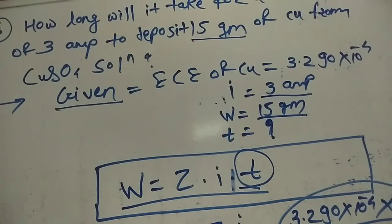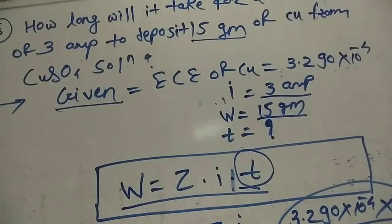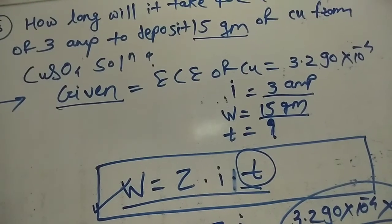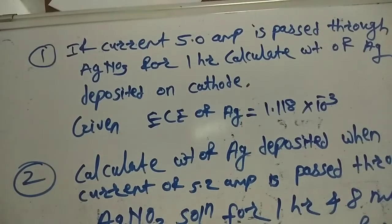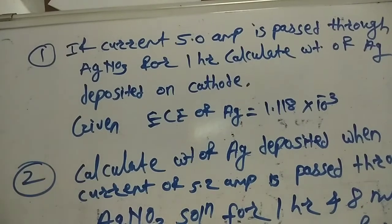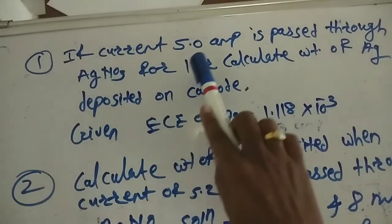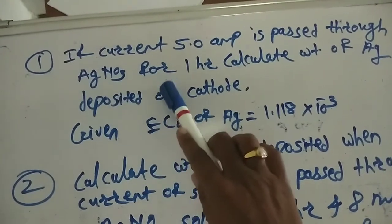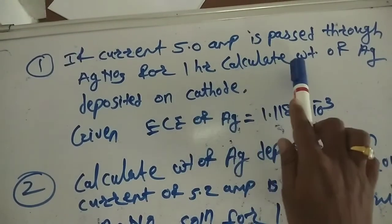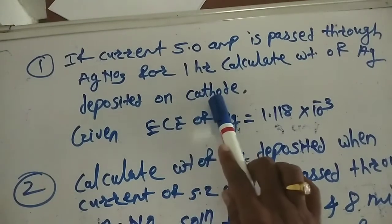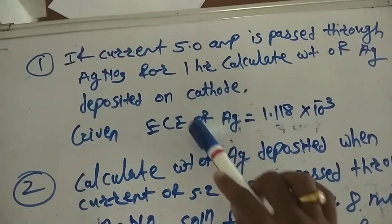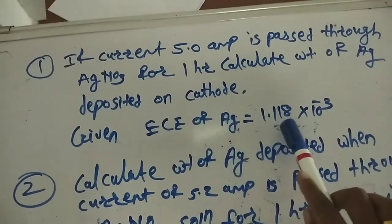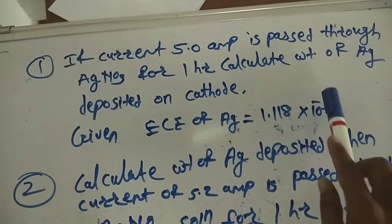For homework, problem 1: if a current of 5 ampere is passed through silver nitrate solution for 1 hour, calculate the weight of silver deposited on the cathode. The given electrochemical equivalence of silver is 1.118 × 10⁻³. Use the same formula W = Z × I × T, and remember to convert 1 hour into minutes.